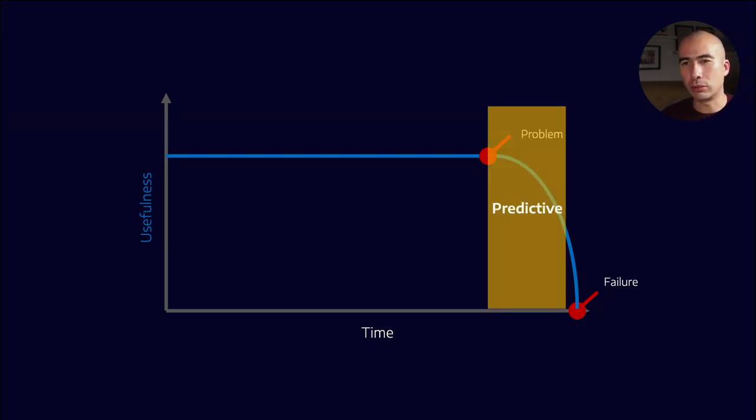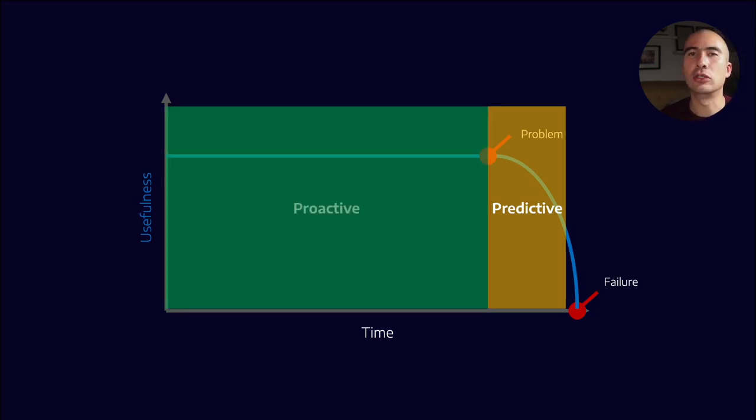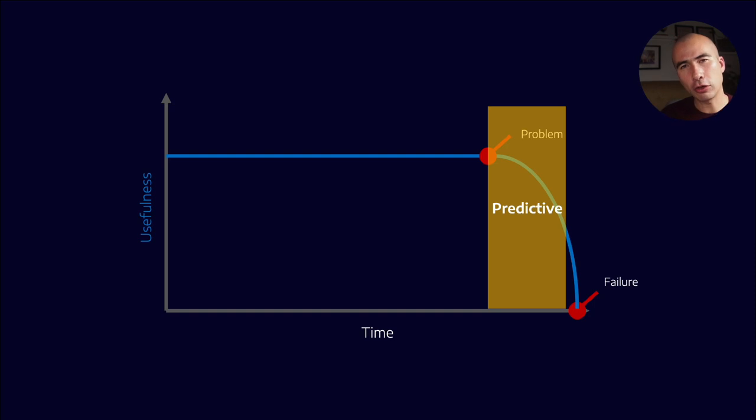If we are trying to troubleshoot after a problem has occurred, we are acting in the predictive domain. Whereas if we are taking interventions before the problem has occurred, then we call that proactive maintenance. Let's concentrate first on this predictive capability.